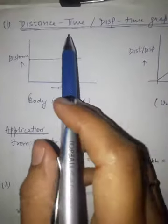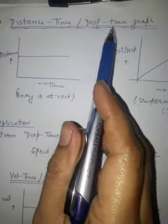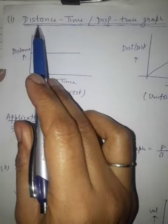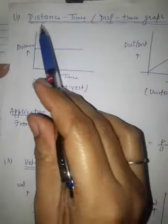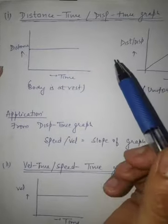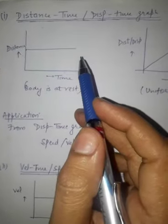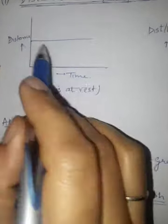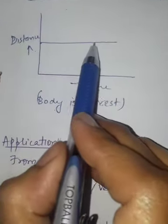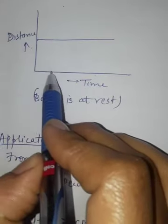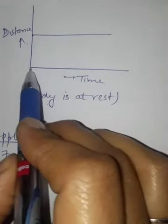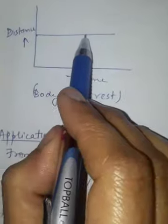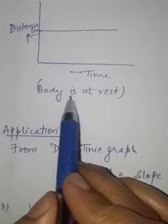Good morning. The first topic of today is the distance-time graph, also called the displacement-time graph. On the x-axis you take time, and on the y-axis you take distance or displacement — these are one and the same thing in the case of a body moving in a straight line. If the graph is a straight horizontal line, it means the distance is constant, for example 5 meters, which means the body is at rest and not moving.